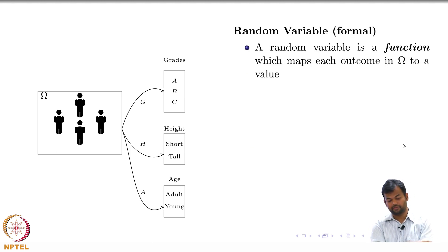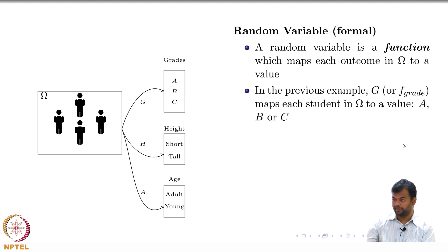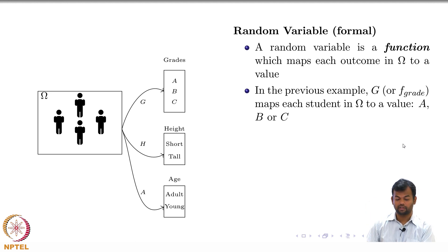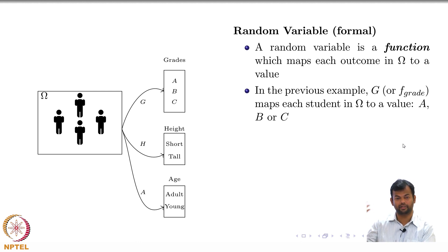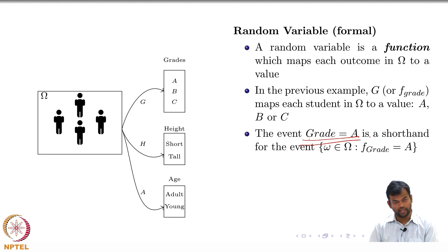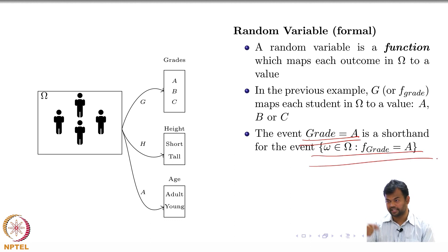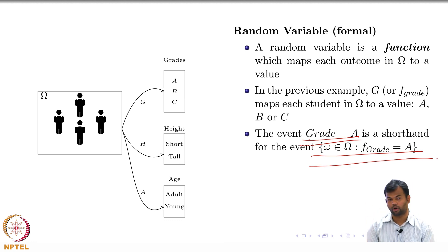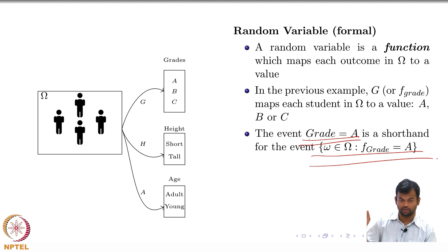This view is more modular and reusable. The more formal definition is that a random variable is a function which maps each outcome in your universal set to a value. The random variable capital G is the function which maps each student to one of three possible grades A, B, and C. Remember, a random variable is a function — it is not a variable. The event 'grade equals A' is shorthand for all outcomes from the universal set for which applying the function gives grade A.